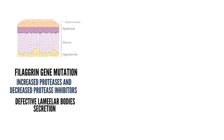Lipids also play an important role in the integrity of the epidermal barrier. Lamellar bodies present in the keratohyalin granules in the granular layer carry essential lipids for the stratum corneum. However, because of filagrin deficiency, there is defective secretion of lipid components from the lamellar bodies, further compromising epidermal integrity. So three things cause epidermal barrier dysfunction: filagrin mutation, increased proteases, and altered lipid content.